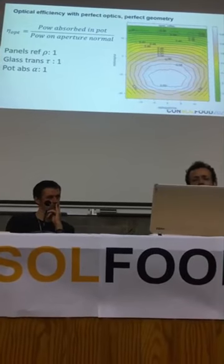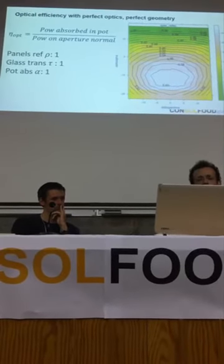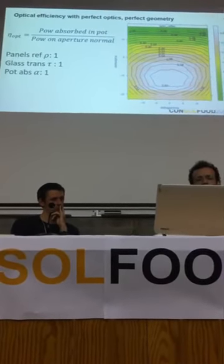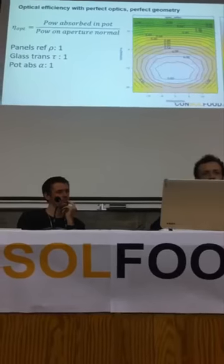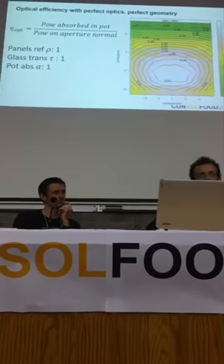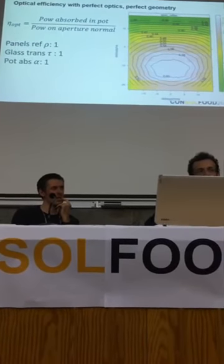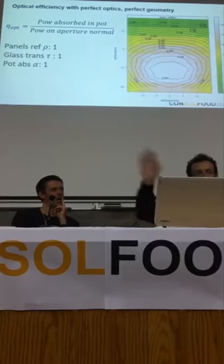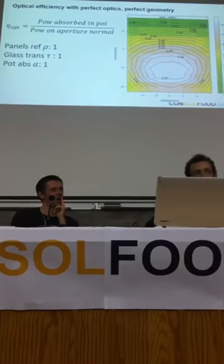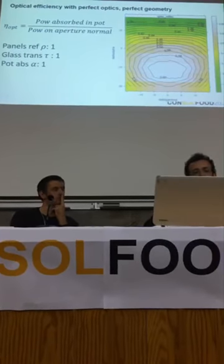Another interesting thing is that we have, at peak, 60% optical efficiency. So 40% of the rays just jump out of the funnel. It's not a perfect geometry.